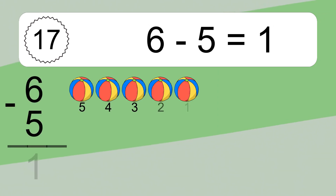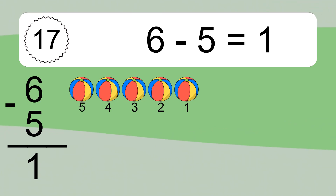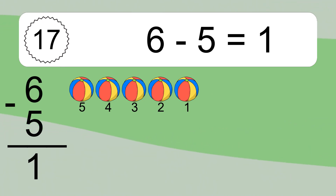6 minus 5 equals 1. Let's count it: 5, 4, 3, 2, 1.